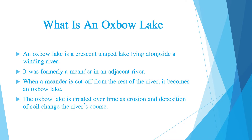What is an oxbow lake? An oxbow lake is a crescent-shaped lake lying alongside a winding river. It was formerly a meander in an adjacent river. When a meander is cut off from the rest of the river, it becomes an oxbow lake. The oxbow lake is created over time as erosion and deposition of soil change the river's course.